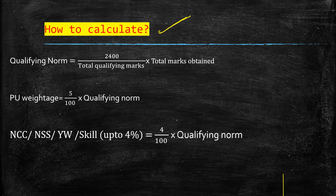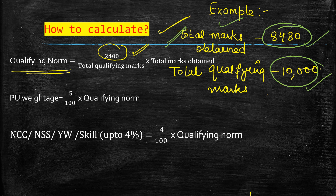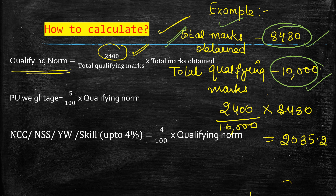To calculate marks: the university has used 2400 as the base for the qualifying norm because different students had different numbers of subjects in graduation. The formula is: Qualifying Norm = (2400 ÷ Total Maximum Marks) × Marks Obtained. For example, if you scored 8480 out of 10,000, then Qualifying Norm = (2400 ÷ 10,000) × 8480 = 2035.2.